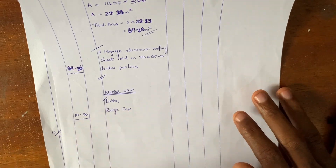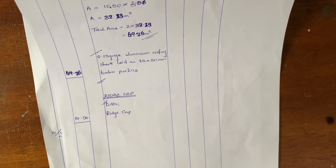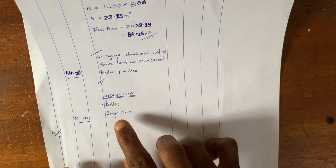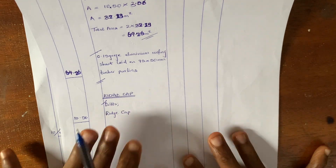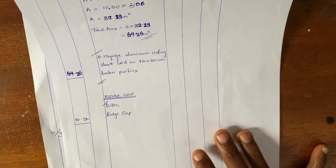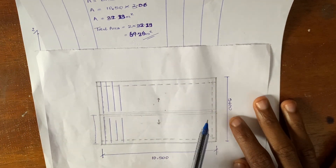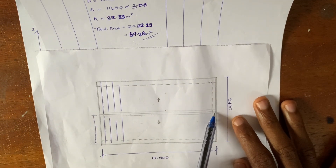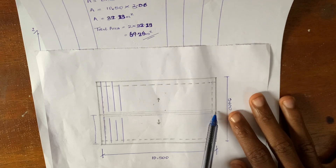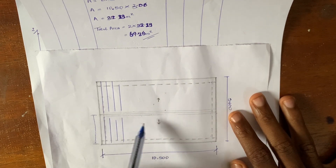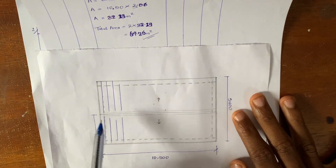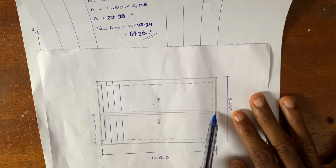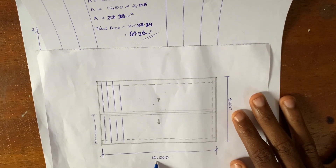The next thing we're going to be booking for is our ridge cap. If you notice, there was no hip cap — this is because it is not a hip roof and we did not calculate for hip rafters. So the only thing we're going to be looking for here is the ridge cap. The ridge cap is the piece of roofing material that is lined at the top of the roof, and it is the same dimension as the ridge, which is the same as the span of the roof — 10,500mm.